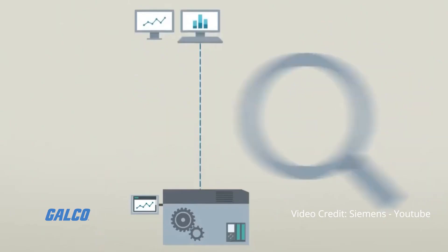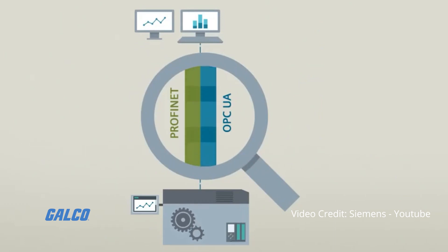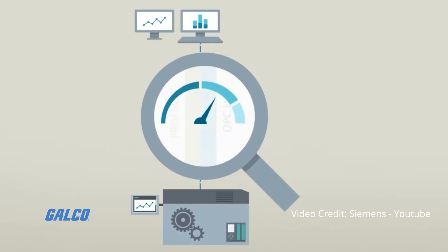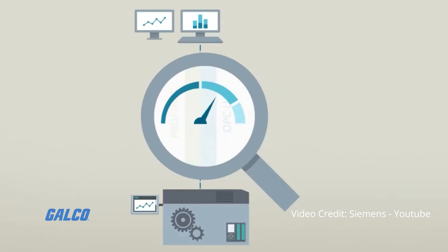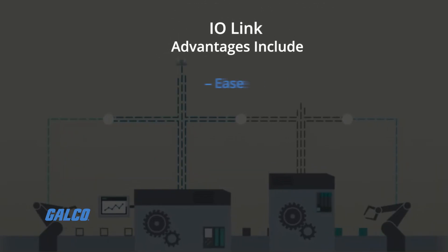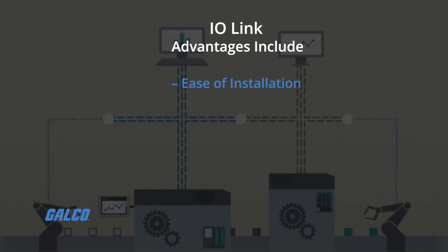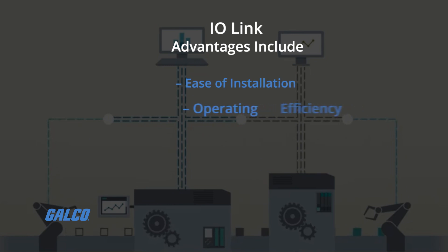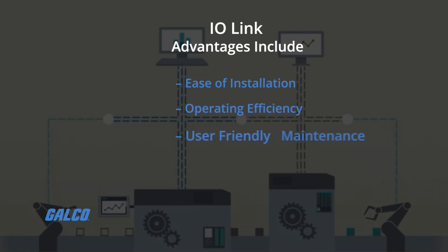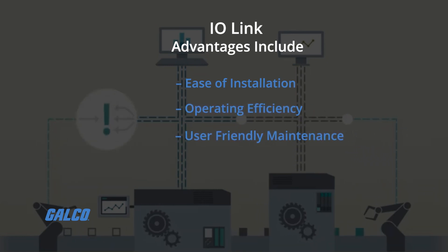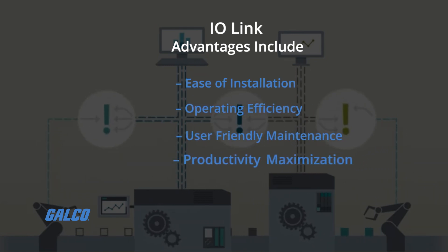One benefit of using IO-Link is that it is fieldbus independent and can be integrated into all fieldbus systems worldwide. Other advantages include ease of installation, operating efficiency, and user-friendly maintenance and productivity maximization.